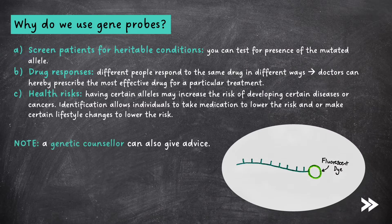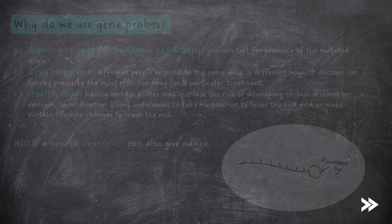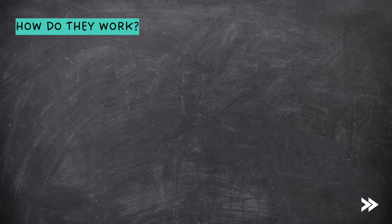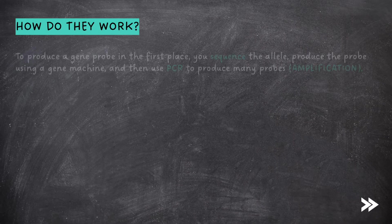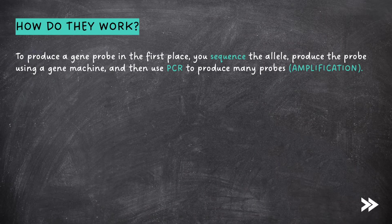Identification allows individuals to take medication and/or make certain lifestyle changes to lower the risk. Note that a genetic counselor can also give advice. So how do gene probes work? To produce a gene probe in the first place, you sequence the allele and produce the probe using a gene machine.